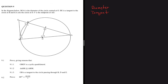We are told that EA cuts the circle at D, and F is the midpoint of AD. If F is the midpoint of AD, then this angle here should be 90 degrees and this angle should also be 90 degrees because of Theorem 1 — the line from the center to the midpoint of a chord is perpendicular.